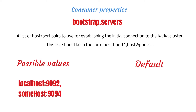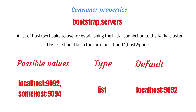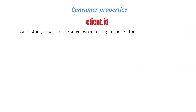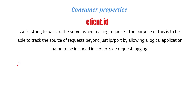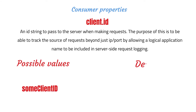The first configuration is bootstrap servers. It is a list of host-port pairs used for establishing the initial connection to the Kafka cluster. Since these servers are just used for the initial connection to discover the full cluster membership, this list does not need to contain the full set of servers. The only required setting is bootstrap server.